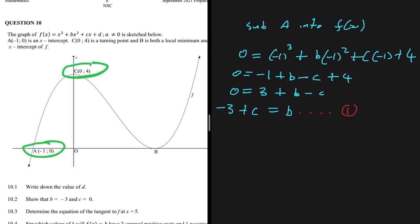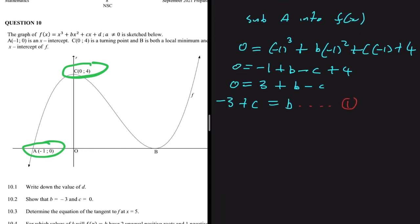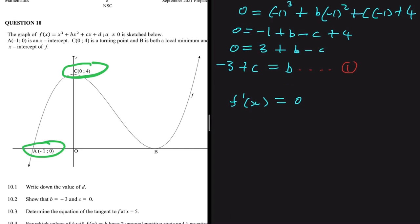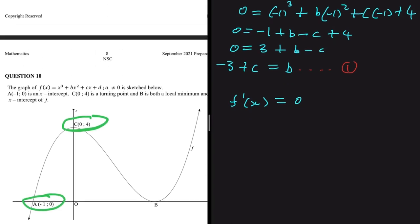We already used point C to find d, so we can't use it directly again. However, point C is both the y-intercept and a turning point. At a turning point, the gradient equals zero, so we can say f'(x) = 0. Let's differentiate f(x) = x³ + bx² + cx + d.